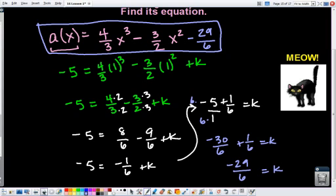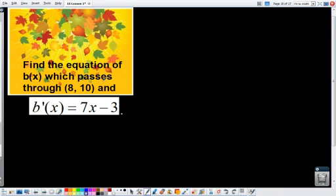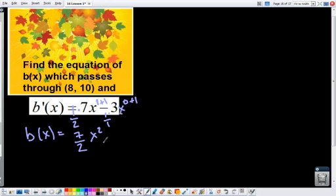All right, let's try this one more time to make sure that you have the hang of it. All right, so it says find the equation of b of x, which passes through 8, 10. And we're given the derivative of b of x, which is b prime of x equals 7x minus 3. So the first thing we're going to do is we're going to find the indefinite integral. So we end up with an exponent of 1, so plus 1. So we end up with x squared. That means we times 7 by half. And we end up with 7 over 2, or 3.5. This is x to the power of 0, because it doesn't exist. So we're going to add 1 here and multiply 3 by 1 over 1. So we end up with minus 3x plus k.